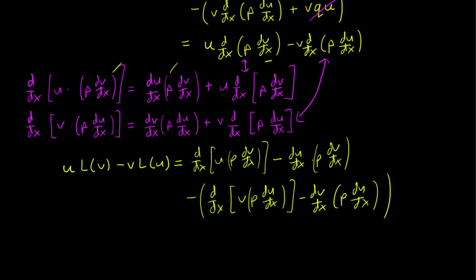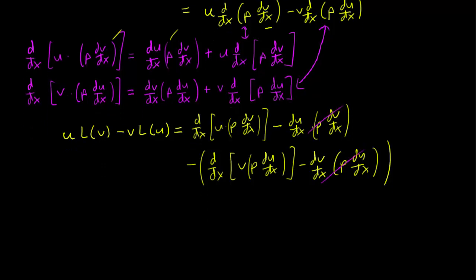Once more, we have a nice cancellation because the du/dx p dv/dx term cancels with the dv/dx p du/dx term. We are left with the nice equation that uL(v) minus vL(u) is just the derivative of u p dv/dx minus v p du/dx.